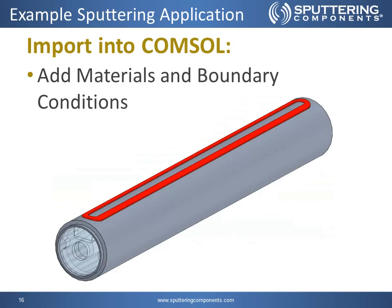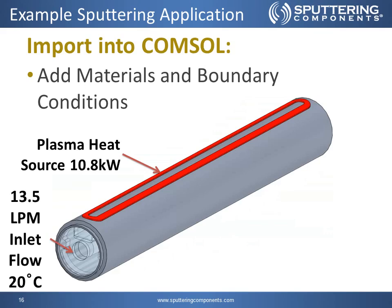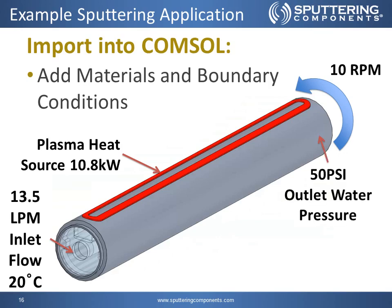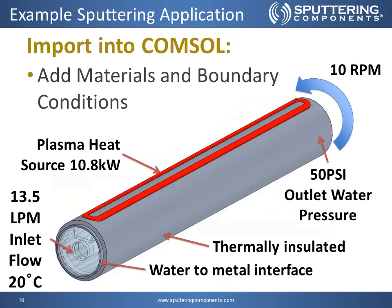Next, we need to add our material and boundary conditions. We start off by putting 13.5 liters per minute of inlet flow at 20 degrees Celsius into the inlet. Then we add our plasma heat source of 10.8 kilowatts onto the actual boundary that is the plasma erosion zone. Then we put a 10 RPM rotation on the entire target tube while keeping the interior magnet bar static. Then we put 50 psi of outlet water pressure on the right-hand side, and assume that the target is thermally insulated, only transferring the heat from the plasma to the water through that water-to-metal interface.